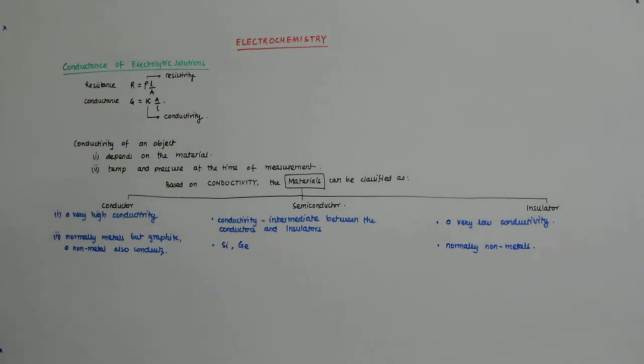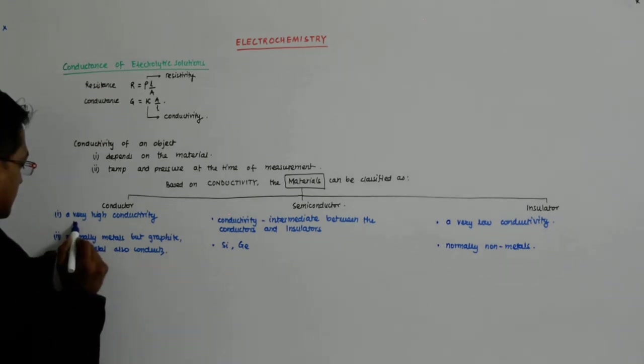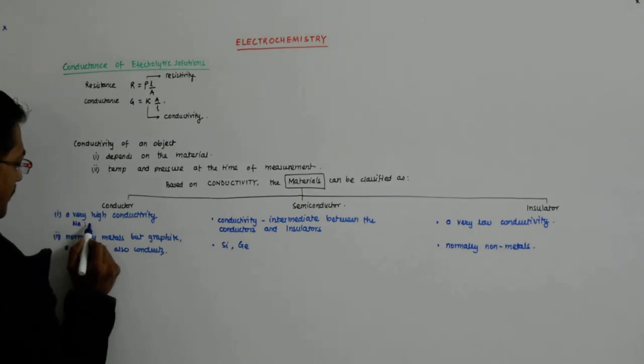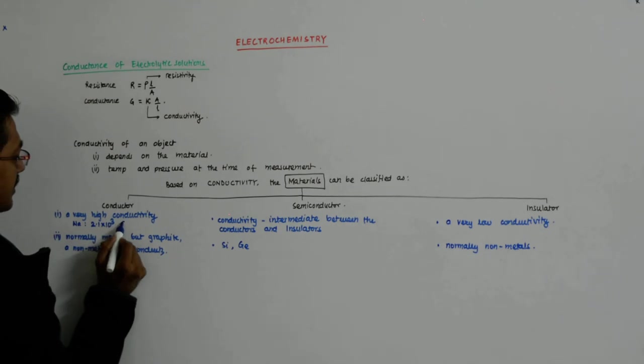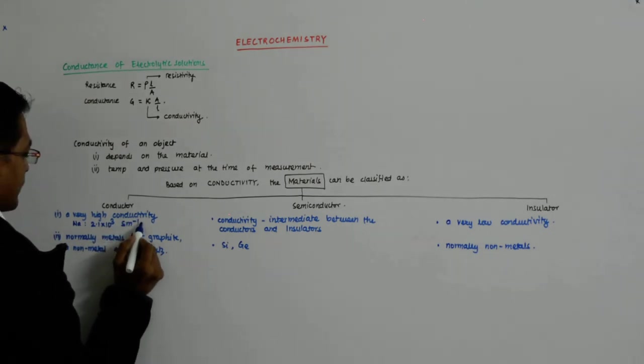For example, the conductivity of sodium is 2.1 into 10 to the power 3 Siemens per meter.